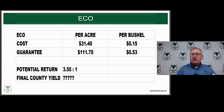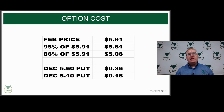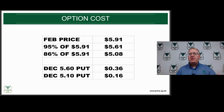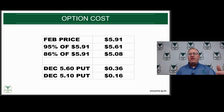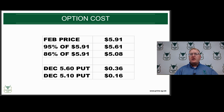You've got a return potential of 3.55 to 1. ECO is not just about price — we need to keep the county yield in mind. Looking at an option comparison: 95% to 5.91 comes down to 5.61, and 86% to 5.91 is 5.08. Essentially you're looking at a bear put spread — we use 560 down to 510. The 560 put would run you 36 cents, the 510 would be 16 cents. Therefore, the cost of a bear put spread would run you around 20 cents a bushel.